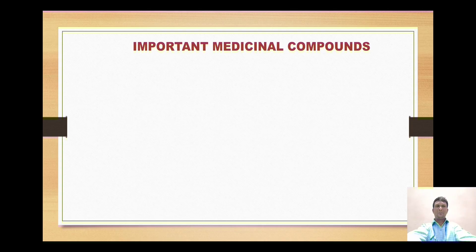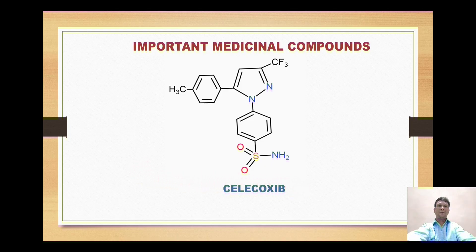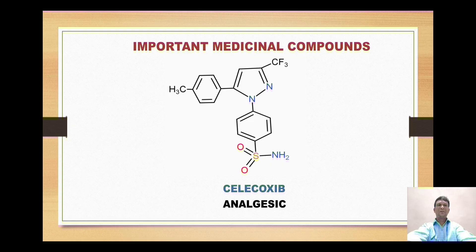Moving to important medicinal compounds — one key structure is celecoxib, which is a potent analgesic drug containing the pyrazole nucleus. That concludes our discussion of pyrazole. Thanks for watching; please like, share, and subscribe.